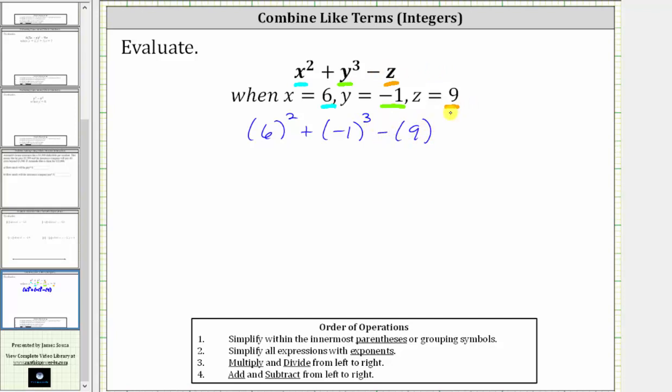The first step on the order of operations is to simplify within the parentheses, but notice nothing simplifies within the parentheses, and therefore the next step is to simplify the exponents, which means for our expression, the first step is to evaluate six squared and the cube of negative one.